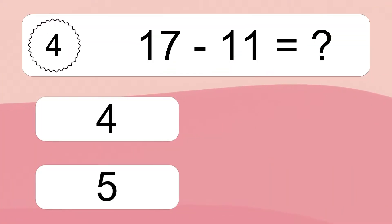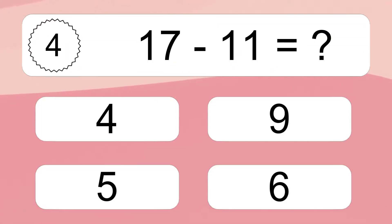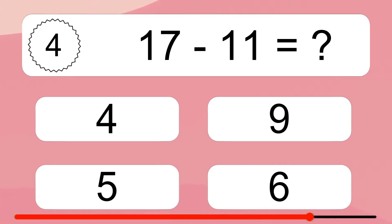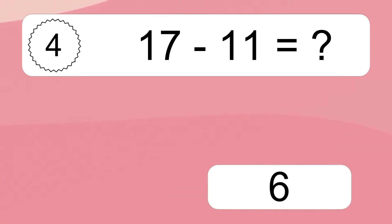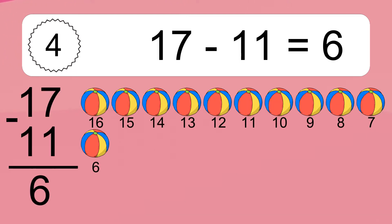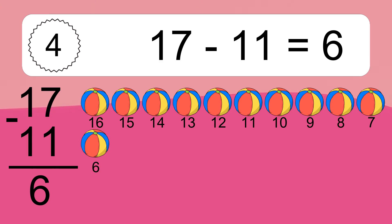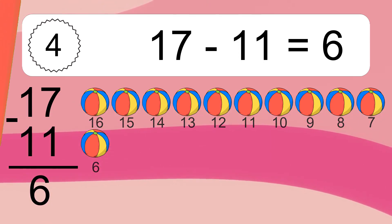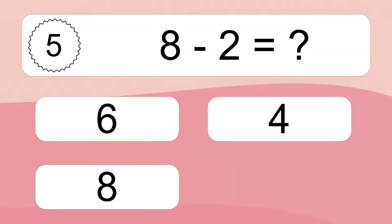17 minus 11 equals what? 17 minus 11 equals 6. Let's count it. 16, 15, 14, 13, 12, 11, 10, 9, 8, 7, 6. 8 minus 2 equals what?